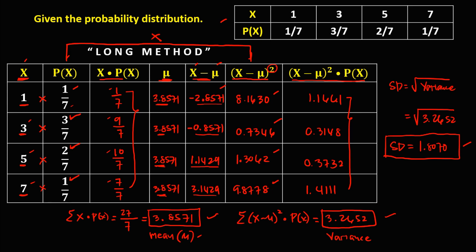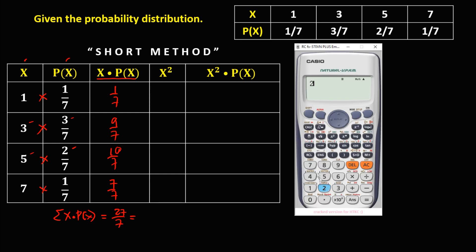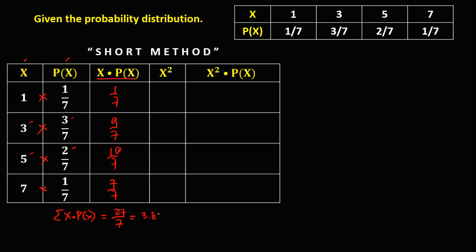Now to solve the same problem using the short method. We need to supply the unknown columns again. For the x·P(x) column: 1 times 1/7 is 1/7; 3 times 3/7 is 9/7; 5 times 2/7 is 10/7; and 7 times 1/7 is 7/7. The summation of x·P(x) is 27/7, which equals 3.8571 in decimal. This is the mean.